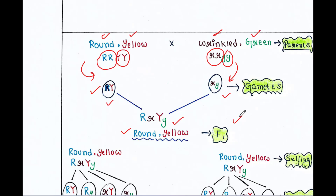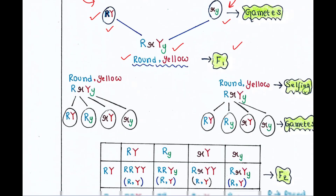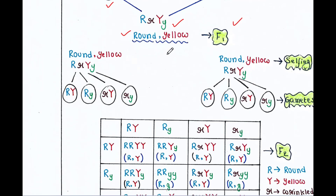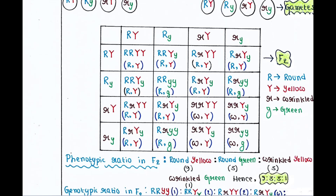Mendel then self-pollinated the F1 plants. The self-pollination resulted in 9 round yellow, 3 round green, 3 wrinkled yellow, and 1 wrinkled green seeds in the F2 generation.